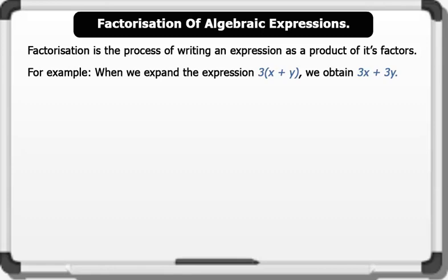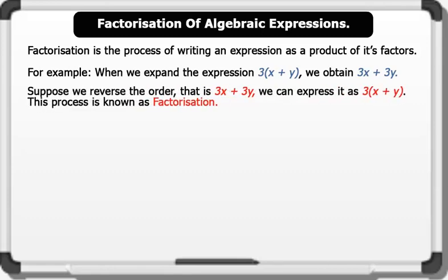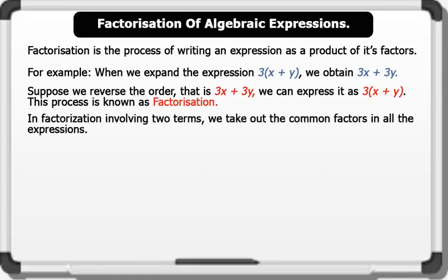Suppose we reverse the order, that is, 3x plus 3y, we can express it as 3 bracket x plus y. This process is known as factorization. In factorization involving two terms, we take out the common factors in all the expressions.